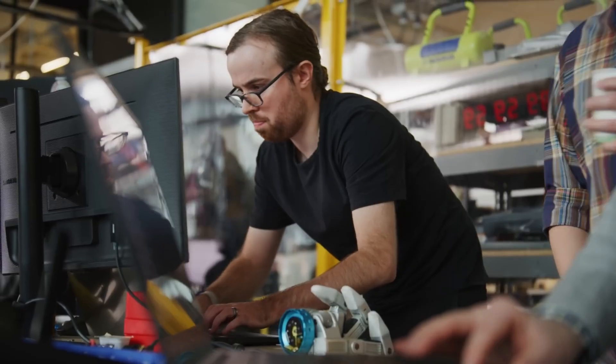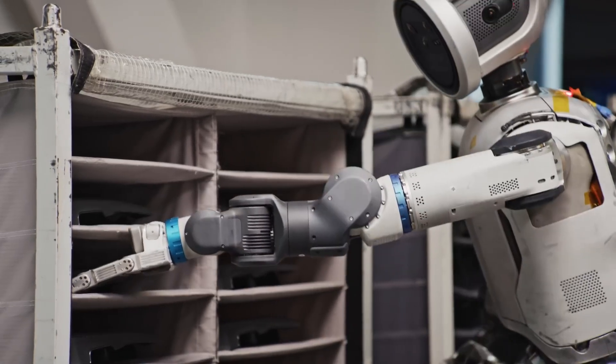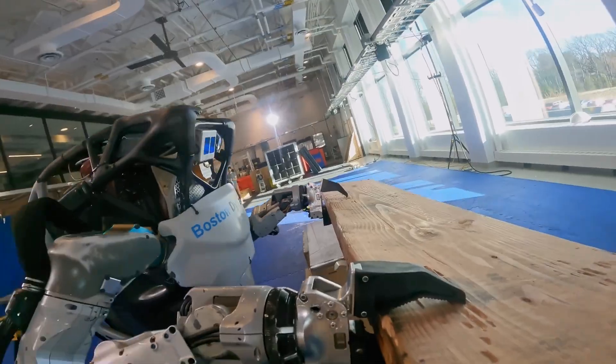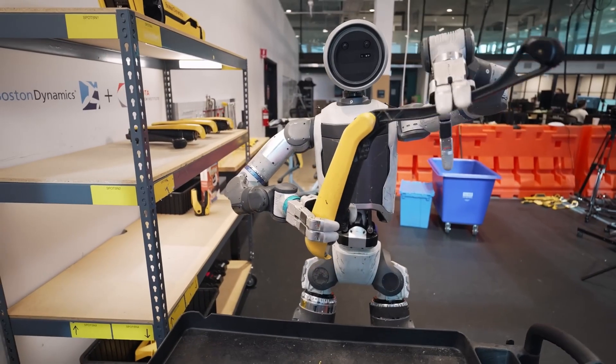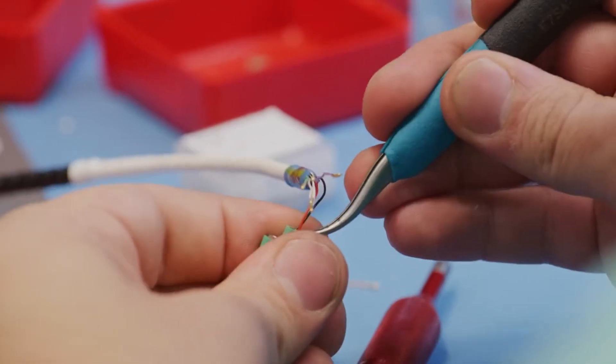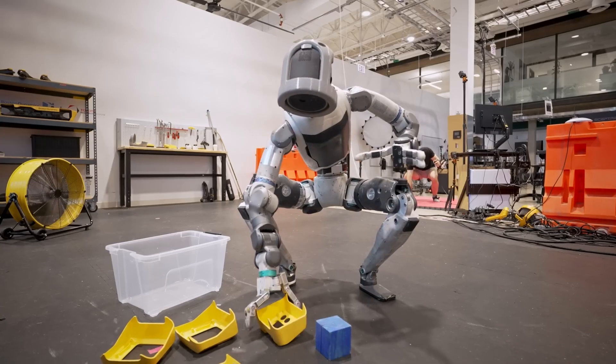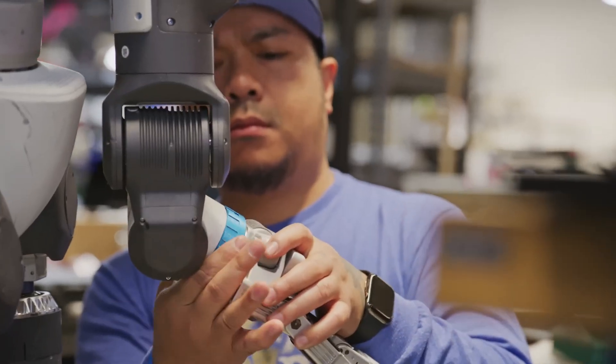The team calls this phase the gripper journey, and they're not kidding. It's one of the hardest design problems in robotics. A gripper isn't just a clamp, it's a small mechanical miracle full of actuators, sensors, and feedback systems crammed into a space smaller than a human hand. Boston Dynamics had to find the sweet spot between durability, control, and human-like versatility.